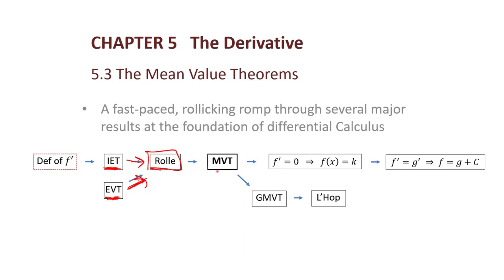Rolle's theorem directly leads to the mean value theorem, which is our star theorem of the day. The mean value theorem then has several consequences right away. If the derivative is constantly zero, then the function is a constant. If two functions have the same derivative, then those two functions must differ only by a constant. The mean value theorem also gives rise to the generalized mean value theorem, which is then used to prove L'Hôpital's rule. There's a lot of bang for our buck today — we can see a lot of results with not too much work.